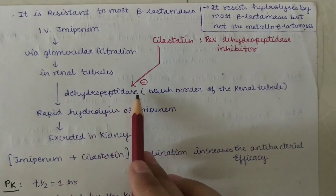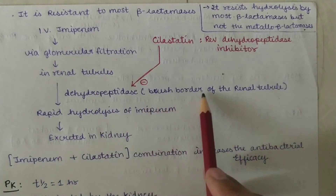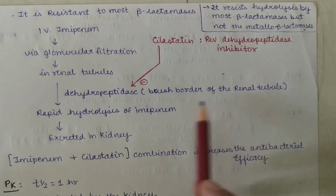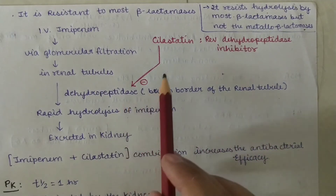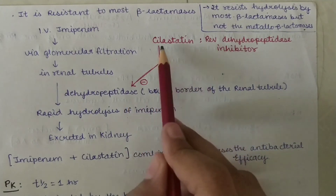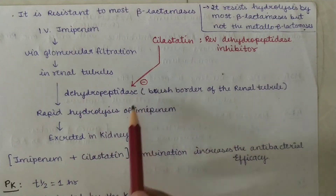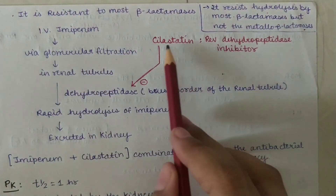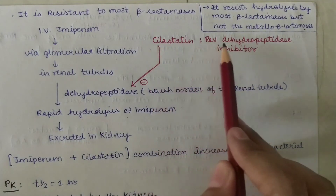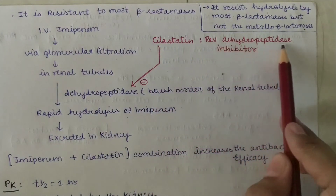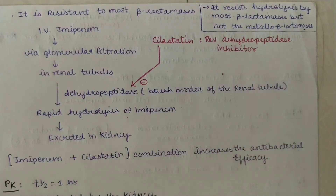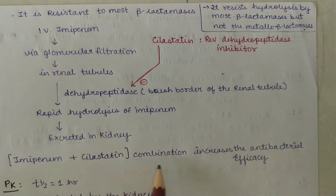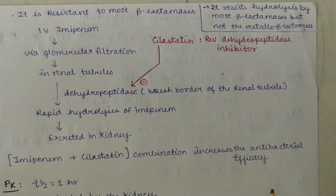The dihydropeptidase enzyme is present in the brush border of the renal tubules. So we give Cilastatin, which inhibits this enzyme and increases Imipenem concentration in the body. Cilastatin is a reversible dihydropeptidase inhibitor. Imipenem plus Cilastatin is the combination that increases antibacterial efficacy.